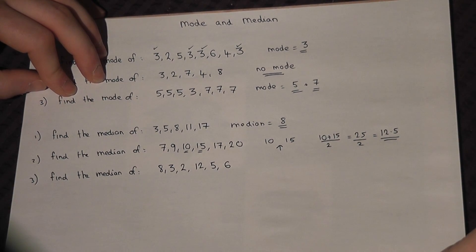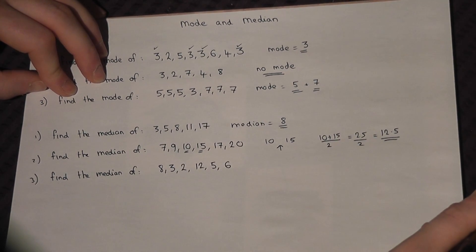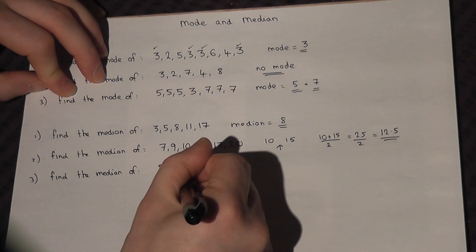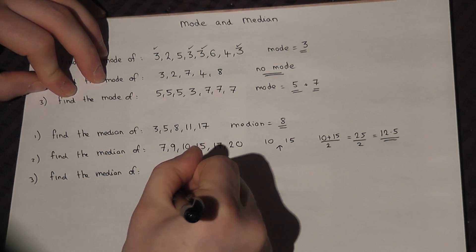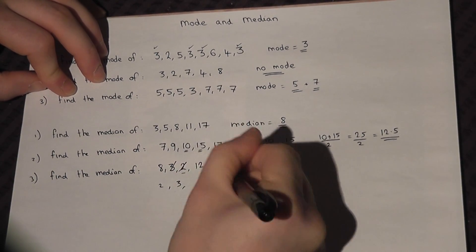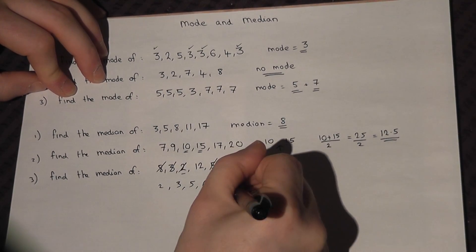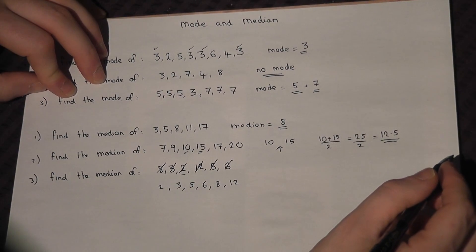Now in the first two examples, the numbers were ordered. When the numbers given to you are unordered, the first step is to order the numbers. So 2, 3, 5, 6, 8 and 12. It's quite easy to forget to order the numbers when you're under pressure.